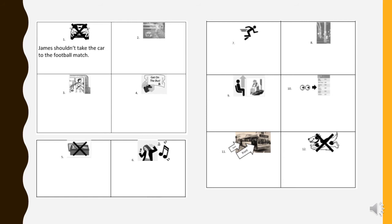Number ten shows eyes looking at the bus timetable — ein Stundenplan für den Bus — man muss immer an den Stundenplan gucken. Number eleven shows the doors at the back and the front of the bus. Where do we get on the bus — vorne oder hinten? Number twelve is an important rule: we shouldn't take our pets on the bus. It has a big cross. This dog does not belong on the bus.